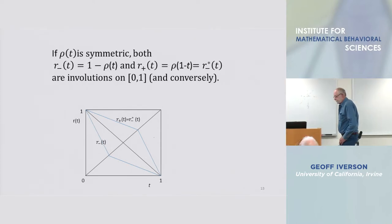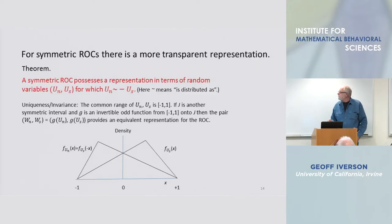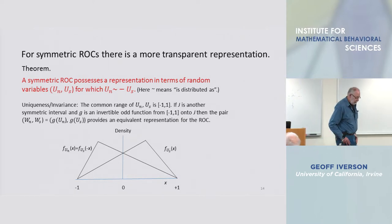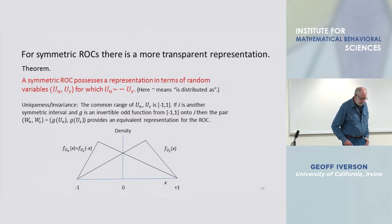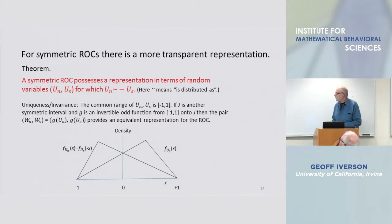That turned out to be very useful. In fact, for symmetric ROCs, there is a more transparent representation, and that's written as a theorem in red.